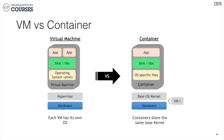Containers, on the other hand, don't include a full-blown operating system. They only include a set of OS-specific files, and this can be trimmed down based on the needs of the application. Remember, containers are just processes. They run on a shared kernel with other containers, and the isolation between containers is provided by Linux namespaces, which are a feature of the kernel itself. So containers are very fast to start and very lightweight because they don't include full-blown operating systems.